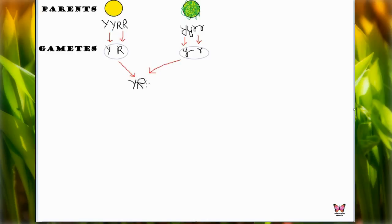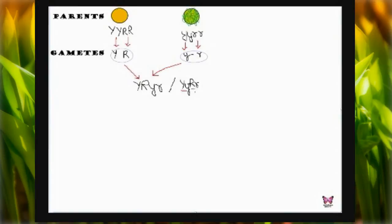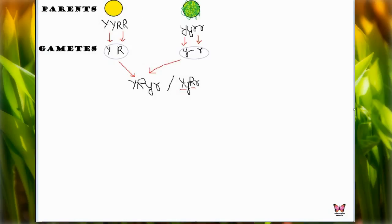In the F1 generation, if we rearrange, we get capital Y, capital R, small y, small r — or written properly as capital Y, small y and capital R, small r. This is the F1 generation result. Capital Y is dominant over small y which is green, and capital R is dominant over small r which is wrinkled. So our F1 hybrid would be yellow round.